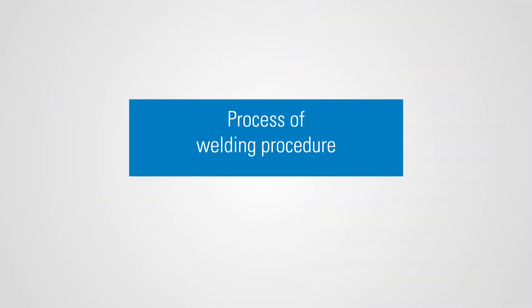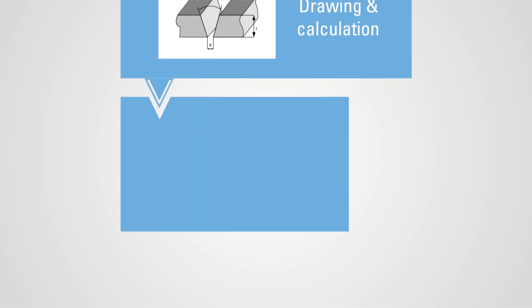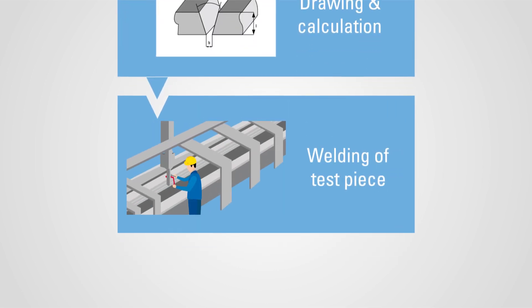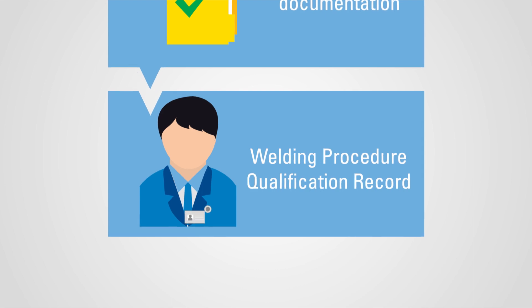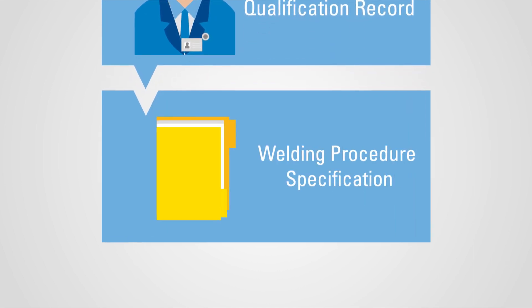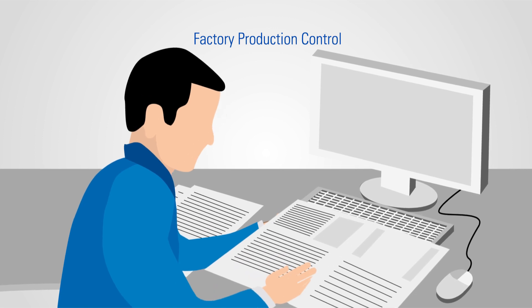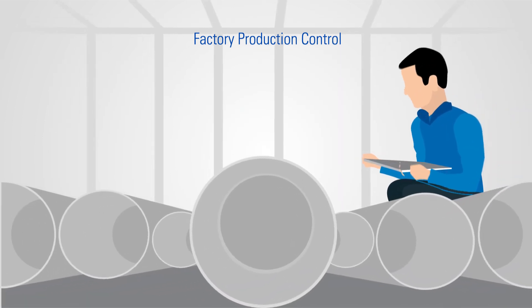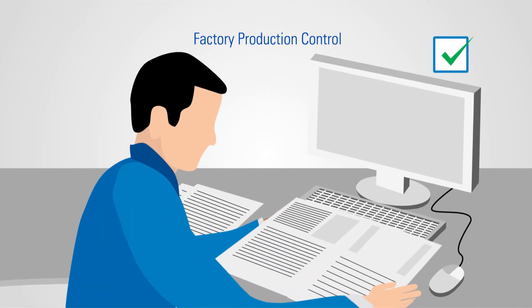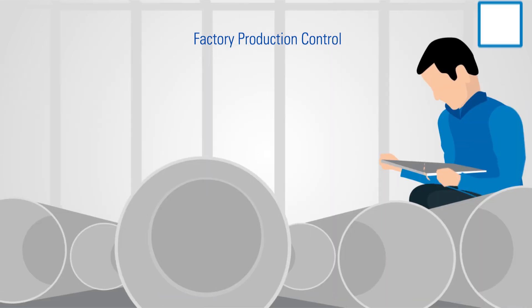You would also have to check your welding procedure and ensure that it is tested, documented, and qualified according to relevant standards. Next, you have to establish, document, and maintain a factory production control system, to show that you can maintain the declared performance characteristics during production.